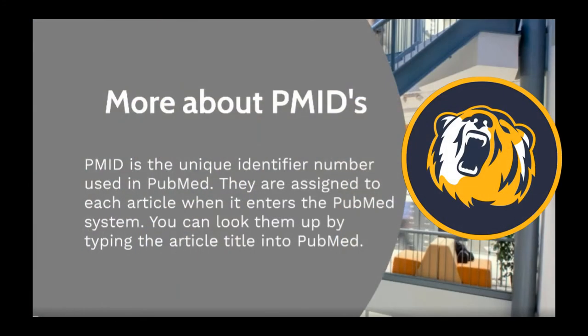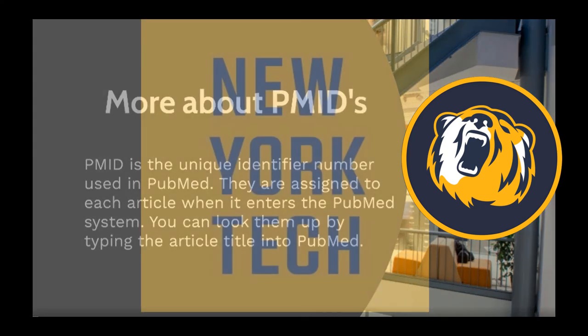PMID is the unique identifier number used in PubMed. They are assigned to each article when it enters the PubMed system. You can look them up by typing the article title into PubMed.